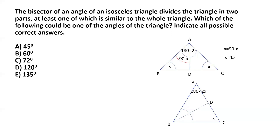Angle DBC is half of angle ABC since BD bisects it, so angle DBC equals x over 2. Since triangle BDC is similar to the original triangle ABC, and they share the common angle ACB equals x, angle BDC must also equal x. So in triangle BDC the three angles are x, x, and x over 2, and those should add up to 180 degrees. Solving for x gives x equals 72. So the correct answers are 45 degrees and 72 degrees.